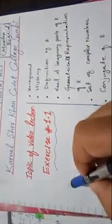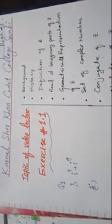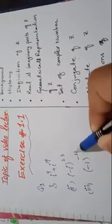So this is Exercise 1.1. Question number 1 requires you to simplify expressions which contain higher powers of iota. Part 1 is iota power 9 plus iota power 19. Part 2 is minus iota power 23. Part 3 is minus 1 power minus 23 divided by 2, and Part 4 is minus 1 power 15 by 2.